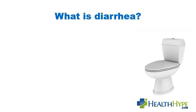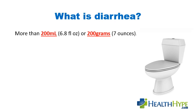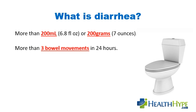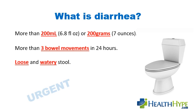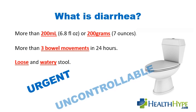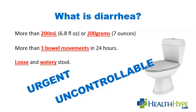Diarrhea can be defined as passing more than 200 milliliters or 200 grams of stool within a 24-hour period. It can also be defined as having more than 3 bowel movements in 24 hours. Loose and watery stool, urgency to have a bowel movement, and uncontrollable bowel movements are some of the other features of diarrhea.